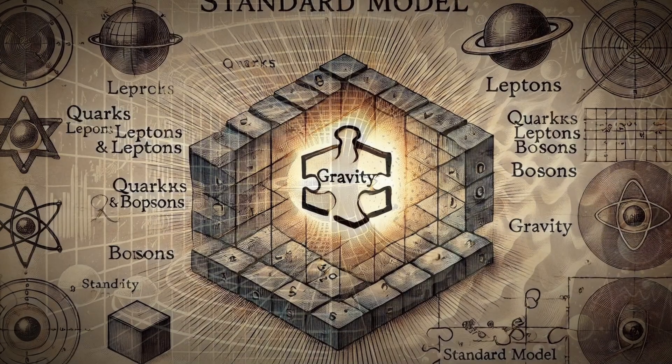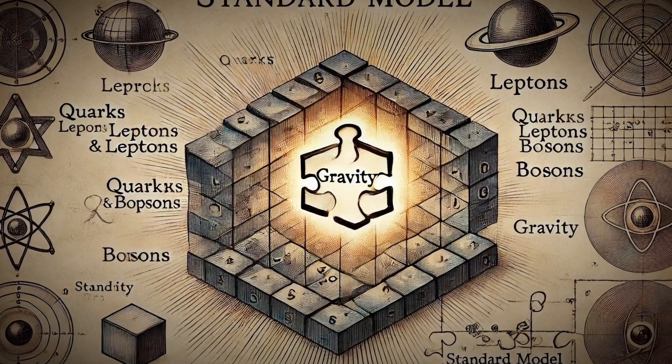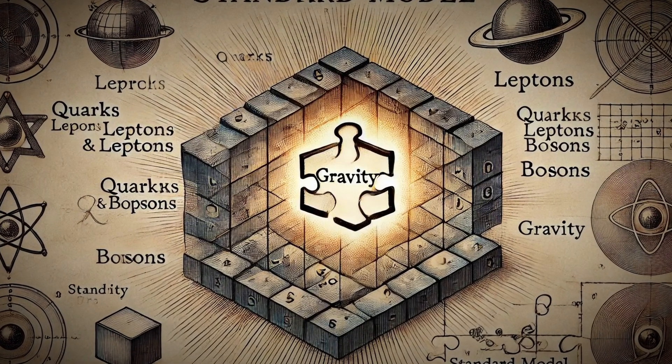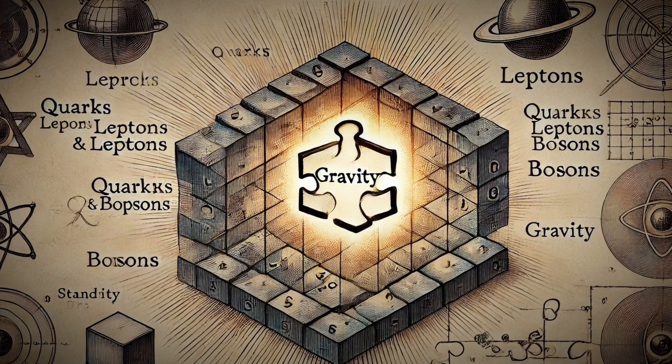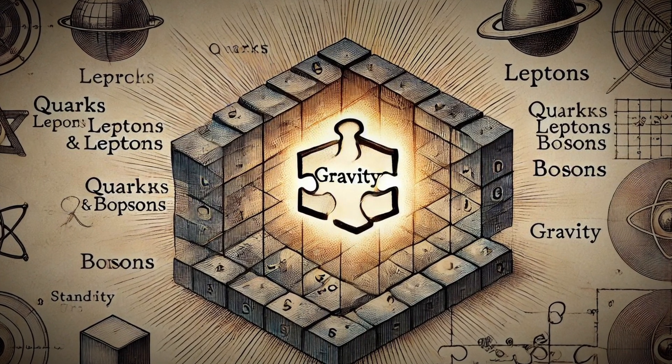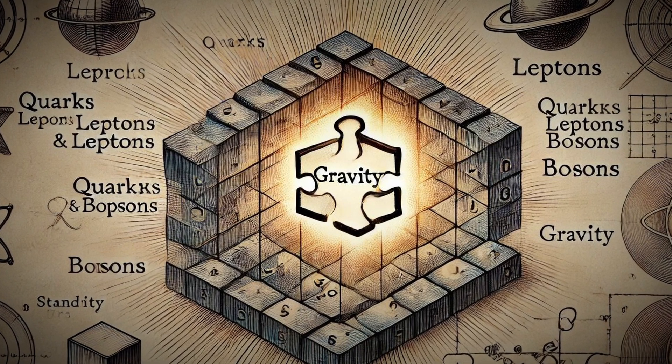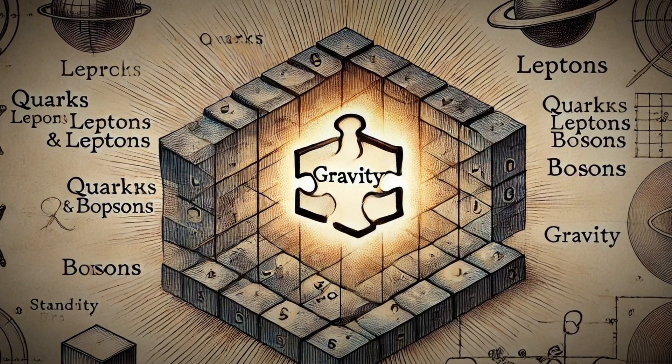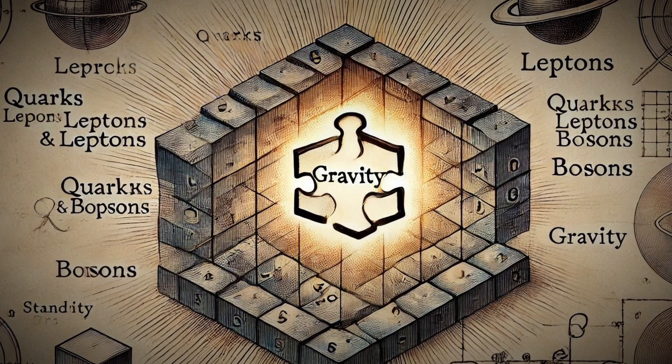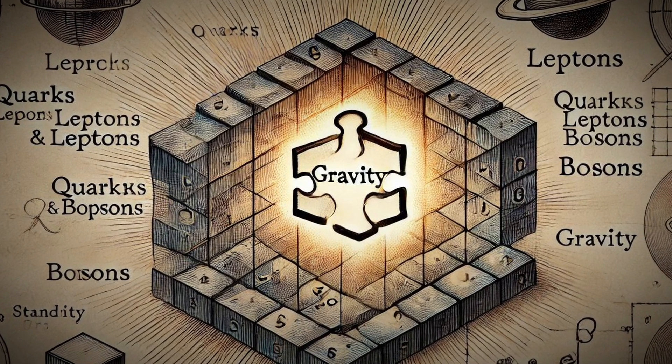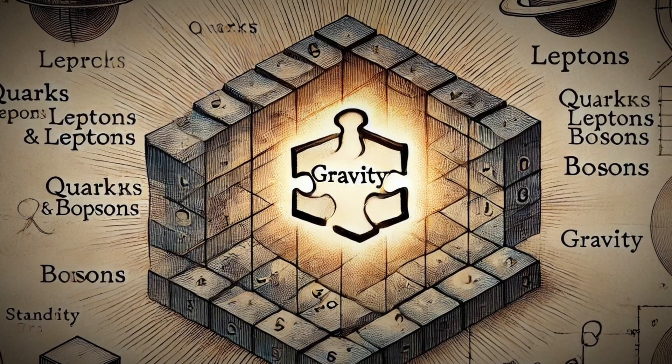The standard model of particle physics is our best attempt to describe the universe's building blocks. It unites the electromagnetic, strong, and weak forces under a single framework. However, it leaves gravity out entirely. While the standard model explains phenomena like particle interactions and predicts particles like the Higgs boson, it's incomplete without gravity's inclusion.